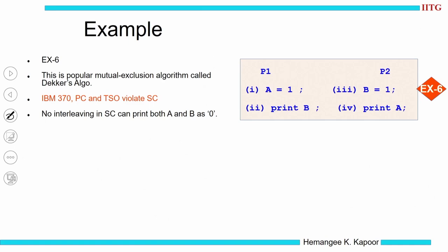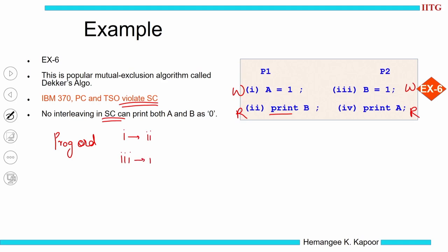One more example — this is a variant of the same Decker's algorithm but instead of printing there, we had an if loop. Overall, it is a write followed by a read order. Similar to example 1. Now, write followed by read — we are relaxing write and read — and you would say they will violate sequential consistency because if I allow them to reorder, the outcome would not be sequentially consistent. So here, no interleaving can print both A and B as 0 if we follow sequential consistency. You can check for yourself that A and B will never both become 0 in this parallel program.